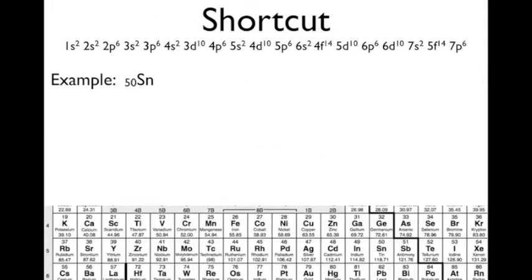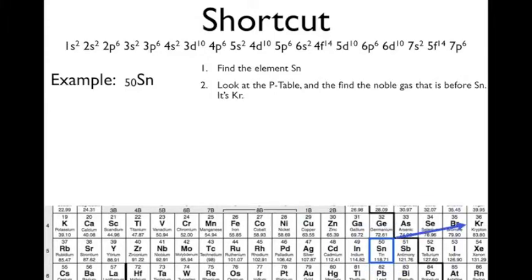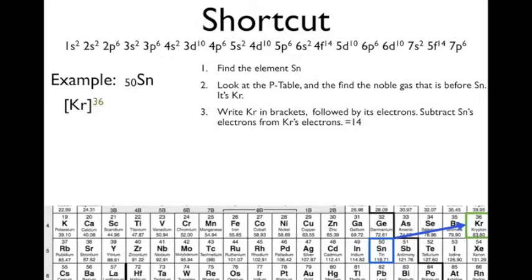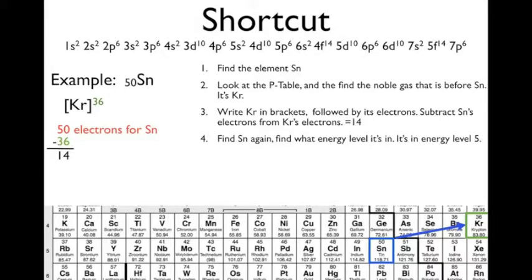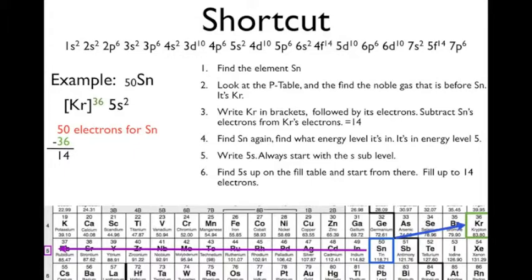Now the shortcut. Let's start with just an example. We're going to use tin. So our first step is to find the element Sn on our periodic table. There it is. And then we look at our periodic table and find the noble gas that is before Sn, and that's krypton. So write Kr in brackets followed by its electrons. Then subtract 50 electrons for Sn minus the 36, and that will give us 14. So then you find Sn again and find out what energy level it's in. It's in energy level 5. So write out 5s because you always start with your s sub-levels. Then go and find 5s up on the fill table and start from there. Fill up all the way to 14 electrons because that's how many we have left to fill in.